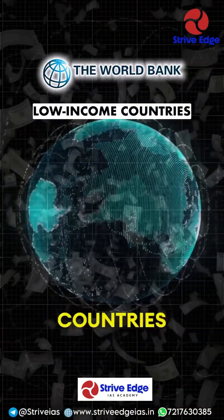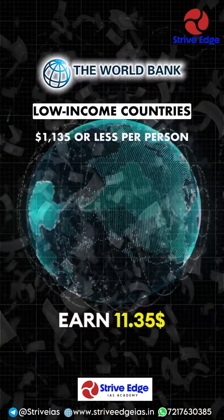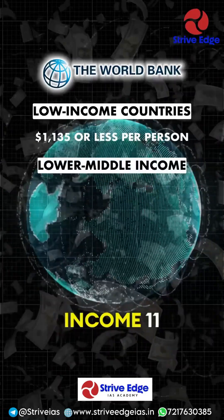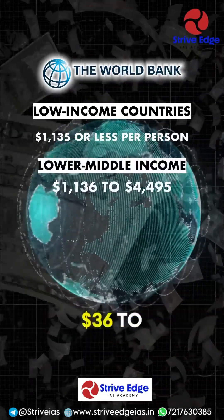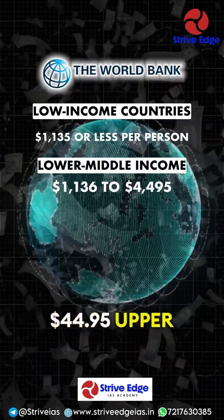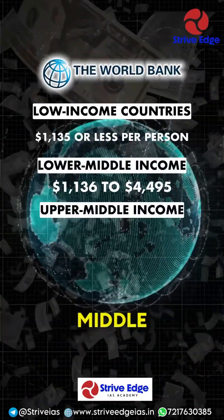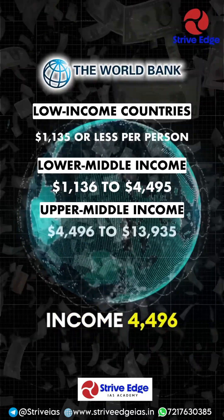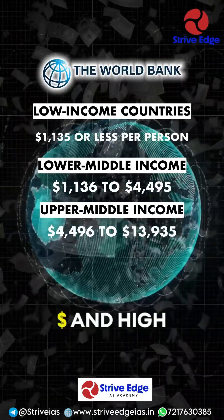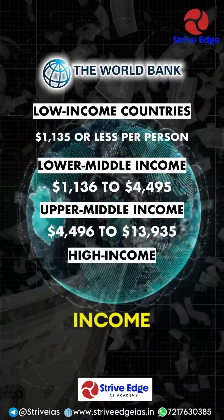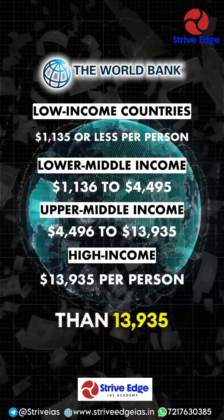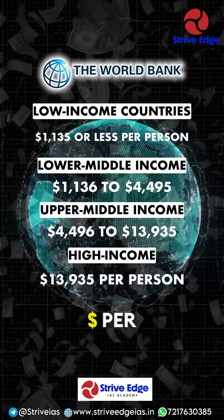Low income countries earn $1,135 or less per person. Lower middle income: $1,136 to $4,495. Upper middle income: $4,496 to $13,935. And high income countries make more than $13,935 per person.